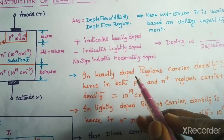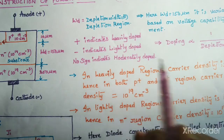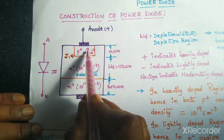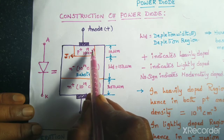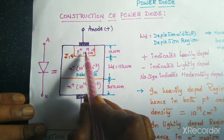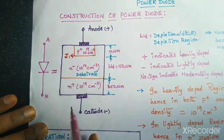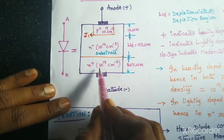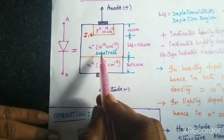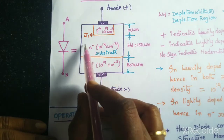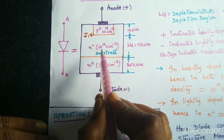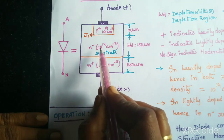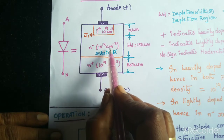Whenever any layer is heavily doped, that means the charge carrier density is more. If we observe in this diagram, the P plus layer has 10 to the power of 19 per centimeter cube — this is the density of charge carriers. The N plus region is also heavily doped, so the charge carrier density there is also more. But coming to the N minus substrate or N minus layer, it is a lightly doped layer, therefore the charge carrier density is less — that's why it is represented with 10 to the power of 14 per centimeter cube.